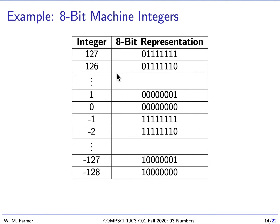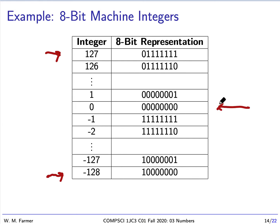This shows the numbers we're representing. You can see down here the smallest number is negative 128 and the biggest number is 127. We have 128 negative numbers, 127 positive numbers, and we have 0. Zero is represented by all 0s, as you would expect. The number 1 has a 1 in the last bit, and things progress as expected until we reach the maximum positive integer.